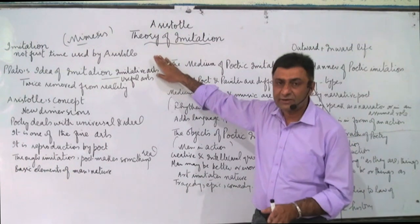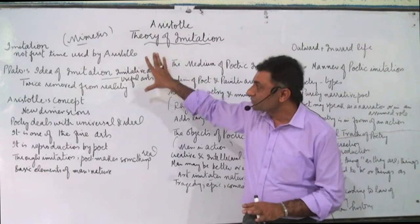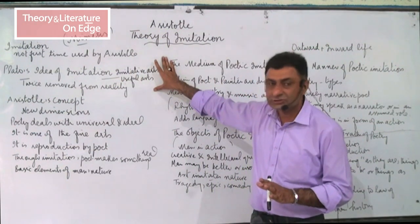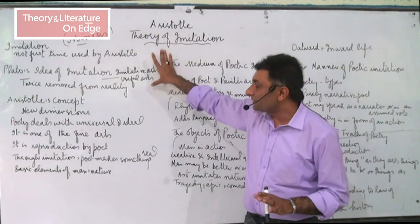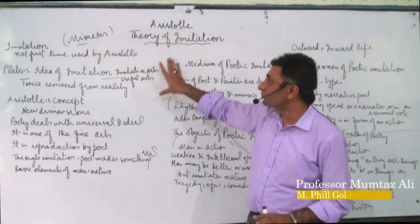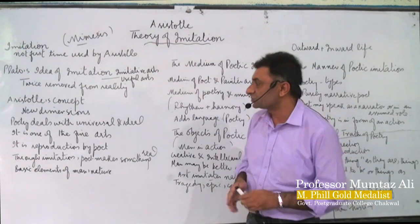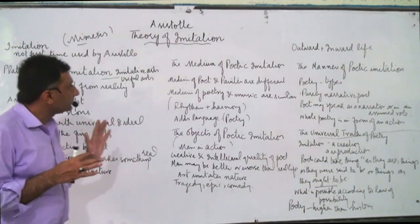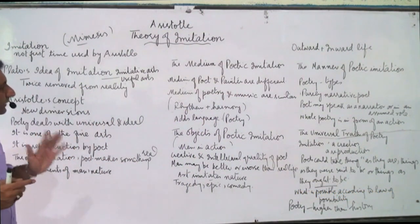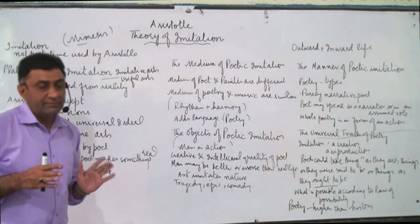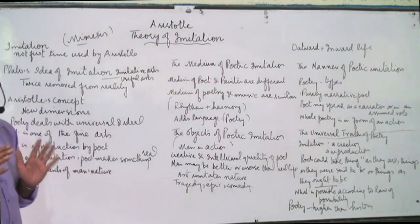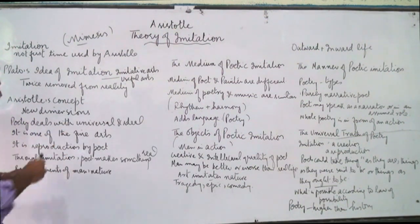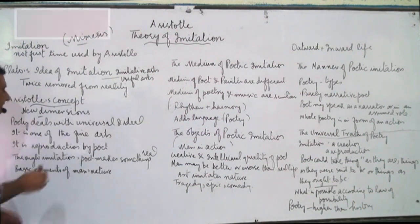Plato makes a critique of poetry as imitative and not useful art. Now let us move towards the theory of imitation by Aristotle. Aristotle took this concept from Plato — he was a student of Plato — but he was not going to accept his ideas of imitation at face value. He gave this concept new dimensions.